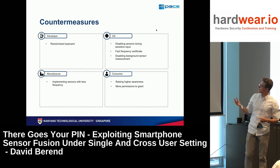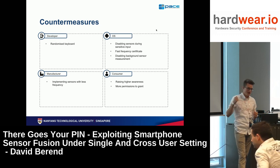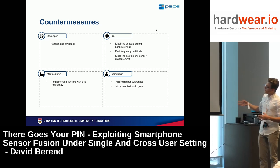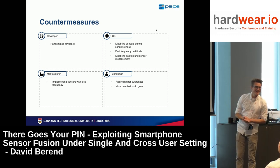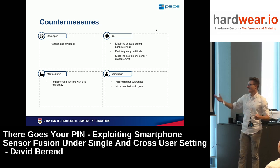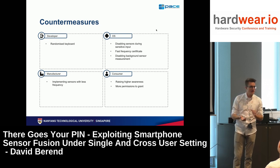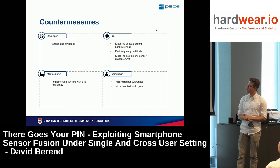The next countermeasure is disabling background sensor measurement — meaning if you are on my website and you close your browser or put your phone on standby, I can't measure anymore. On the consumer side, the key is raising higher awareness, which we are doing right now — though maybe to a few more people. The most critical countermeasure could already be achieved by simply asking for more permissions. Because then people see they have to grant a lot of permissions, the user experience might decrease somewhat, but put it in the right way and that's a viable approach.